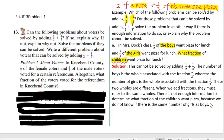The explanation is: when we add fractions, they must refer to the same holes. There is not enough information to determine what fraction of the children. So again, the fraction we're solving for is out of all the children, and we do not know if we have the same number of boys and girls.